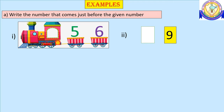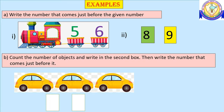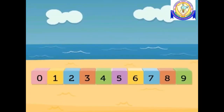Count the number of objects and write in the second box, then write the number that comes just before it. Here we have cars — how many cars are there? There are three cars, so we should write number three in the second box. Now to get the number before three, we count one number backwards and get number two.